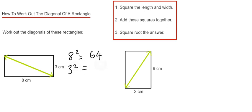If we add these two lengths together, 64 add 9 is 73. And then our final step is we square root 73. You need to calculate this and that gives us a final answer of 8.5 centimeters rounded to one decimal place.